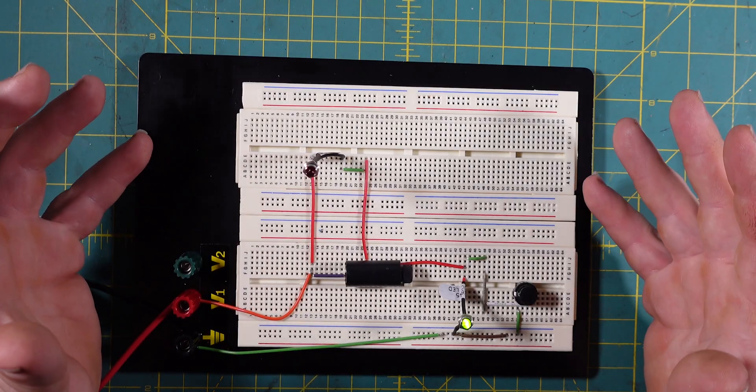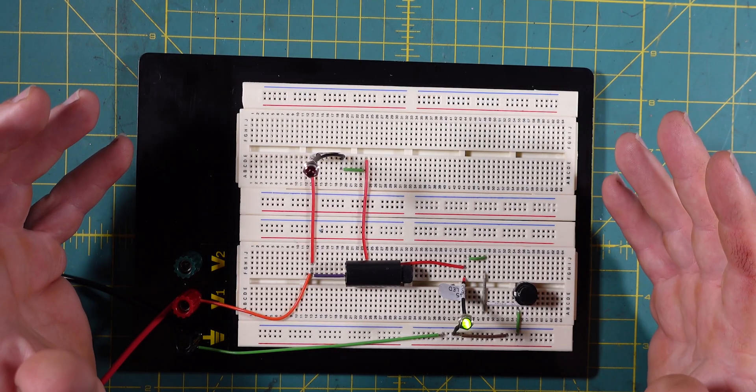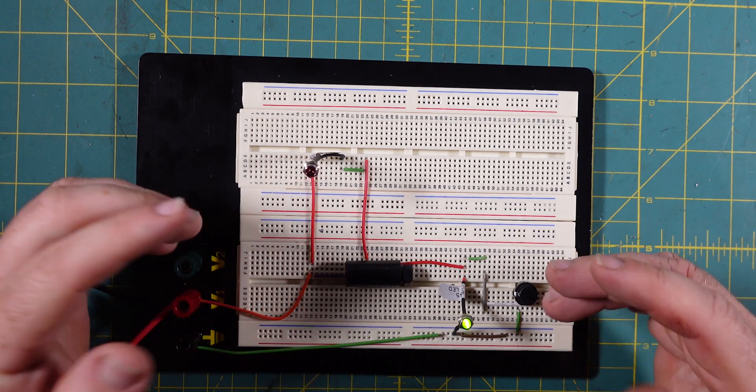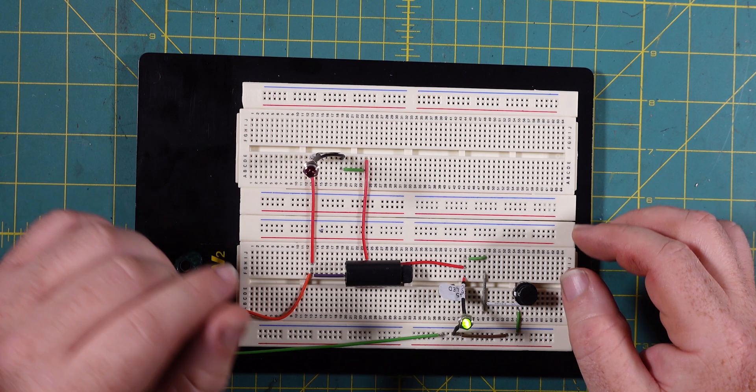G'day Cobbers, welcome back to the bush. In this episode of LockHabs 4WD we're going to show you a dead simple way to put in an indicator light to tell you whether a fuse is blown or not.